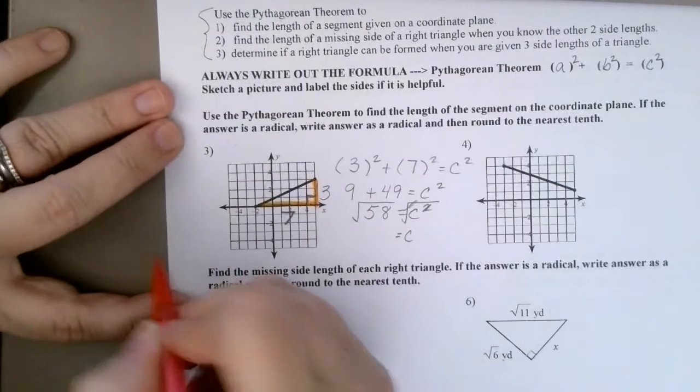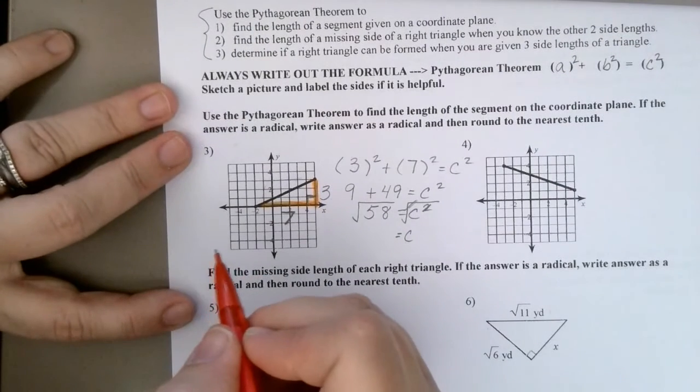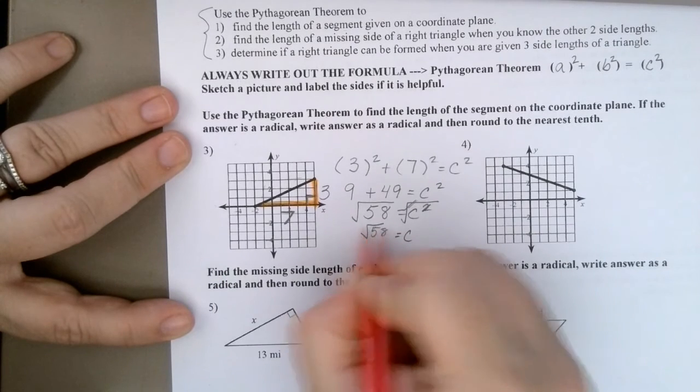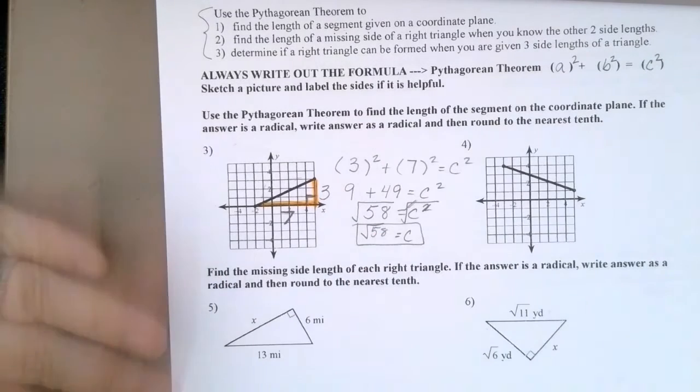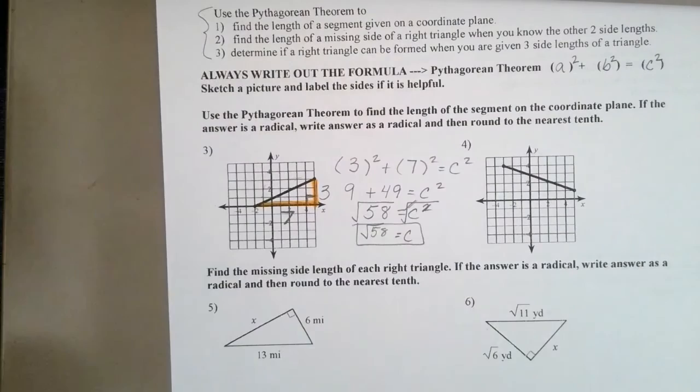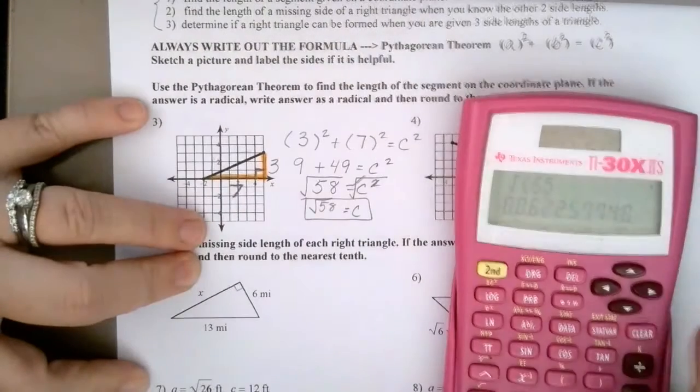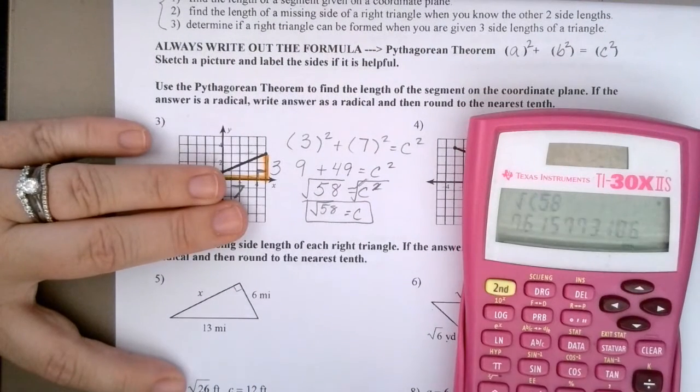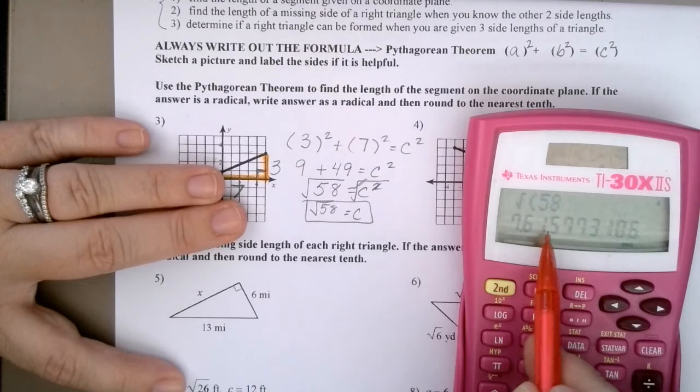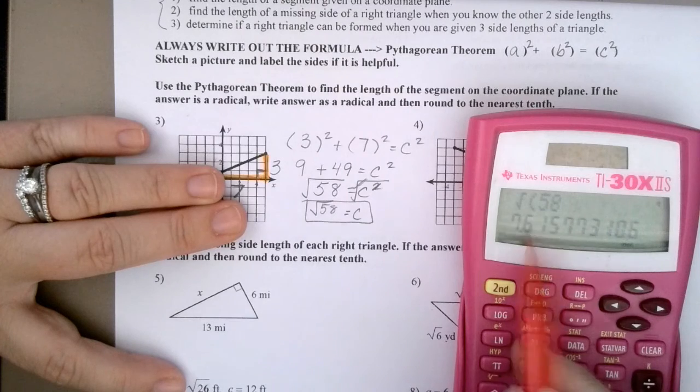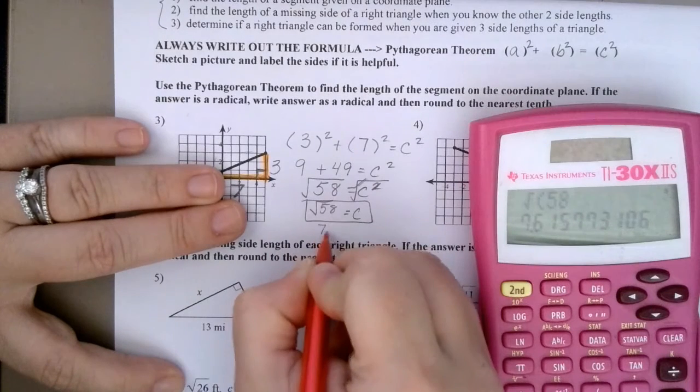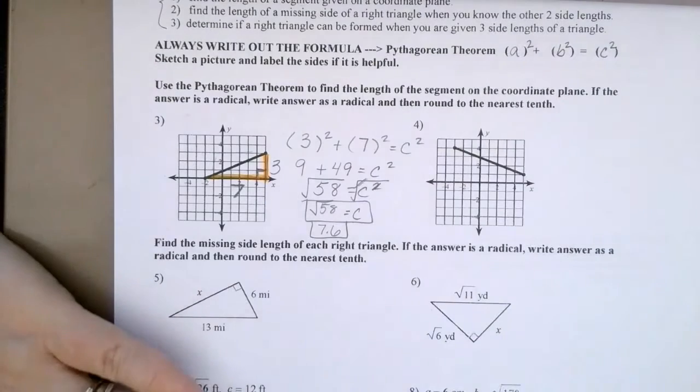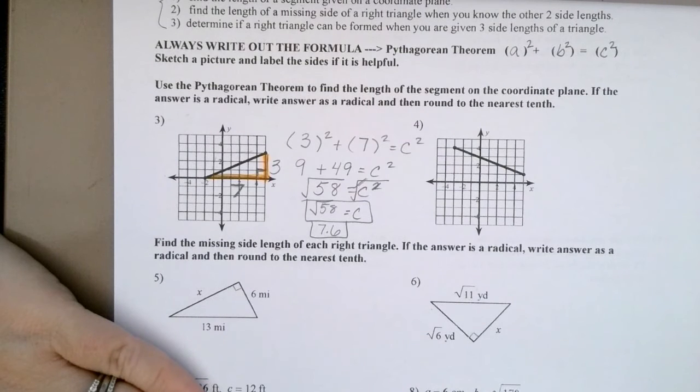Now let me think, 58, is it divisible by four or nine? It's not, is it? That means that rad 58 is as simple as that radical can get. It does, however, say to round to the nearest tenth. So my other answer would be what? Rad 58, 7.61 means that six is going to what? Stay a six. So I would say 7.6 is what the answer is, rounded to the nearest tenth.